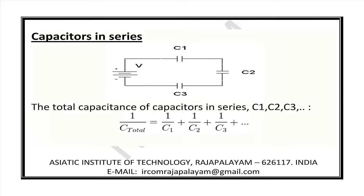In series combination, the total capacitance of the capacitors C1, C2, C3 is given by: 1 by C total is equal to 1 by C1 plus 1 by C2 plus 1 by C3, and so on.